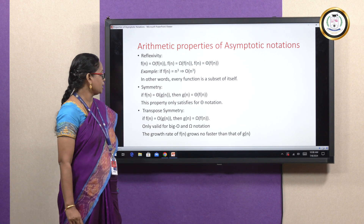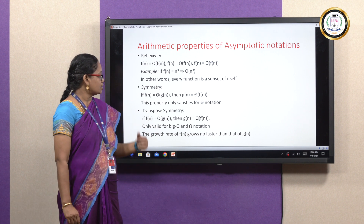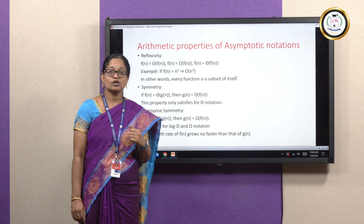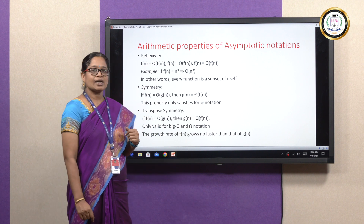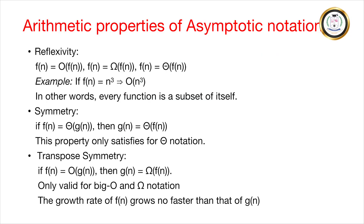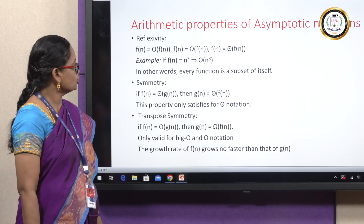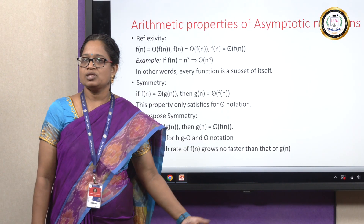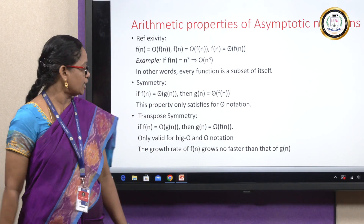Next is the symmetry property. This symmetry property only satisfies for theta notation — it does not satisfy for big O and omega. This property says that if f(n) = Θ(g(n)), then g(n) = Θ(f(n)). That is the symmetry property.